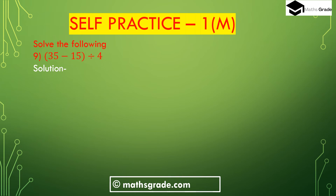Now question number 9: (35 minus 15) division of 4, where 35 minus 15 is inside the bracket. First we have to calculate the subtraction inside the bracket: 35 minus 15 is 20. Then 20 division of 4 is 5. So 5 is the answer. So (35 minus 15) ÷ 4 is 5.